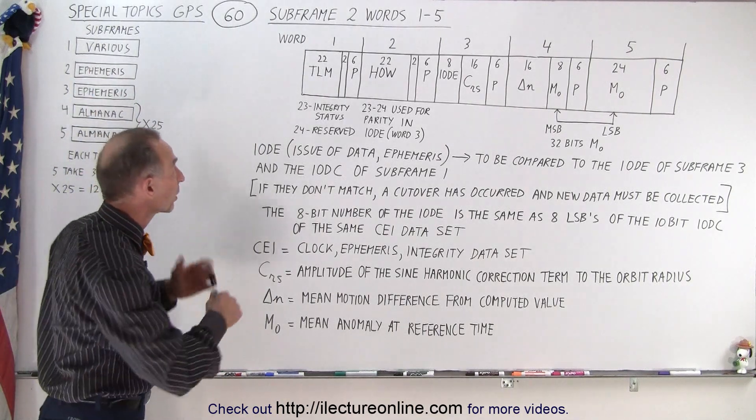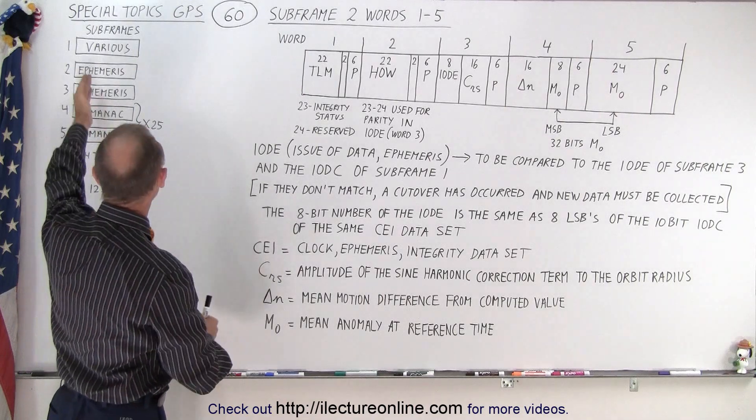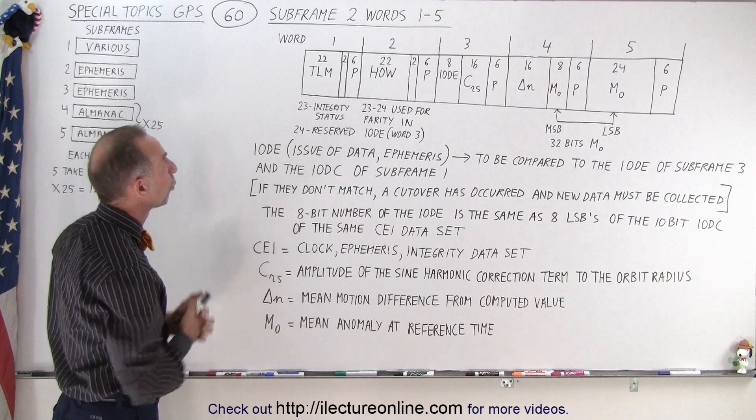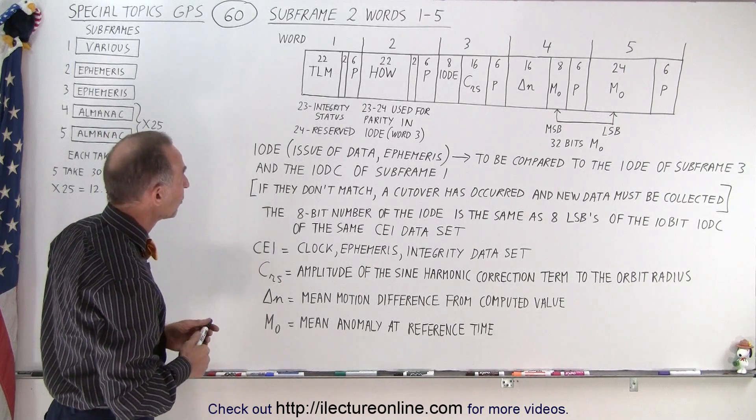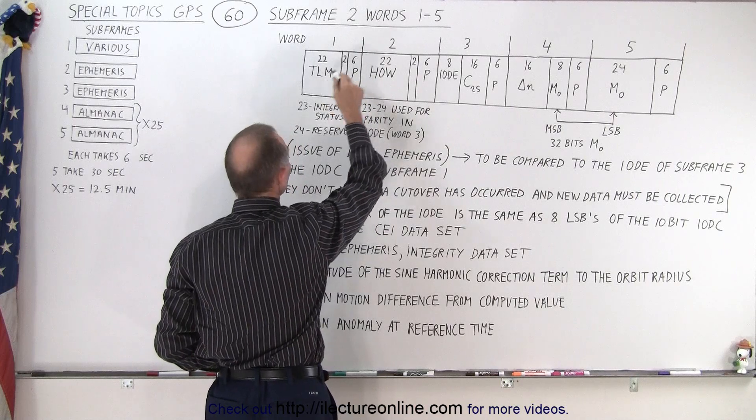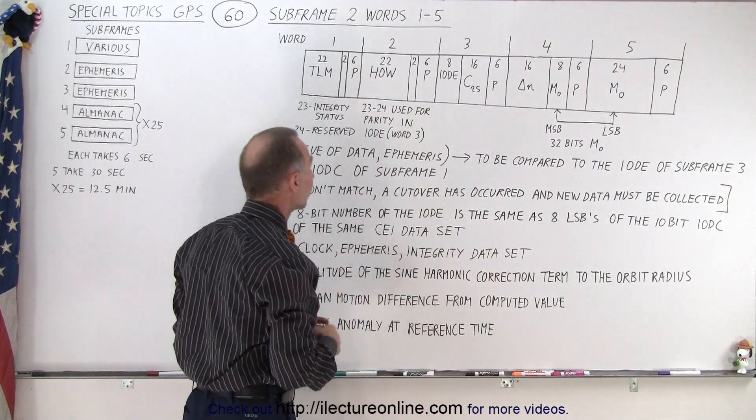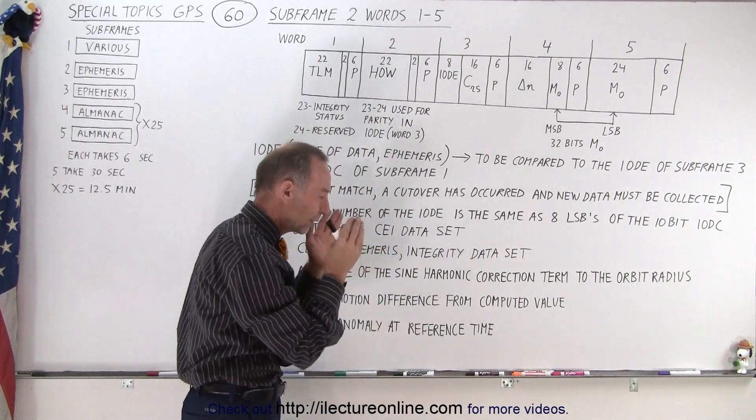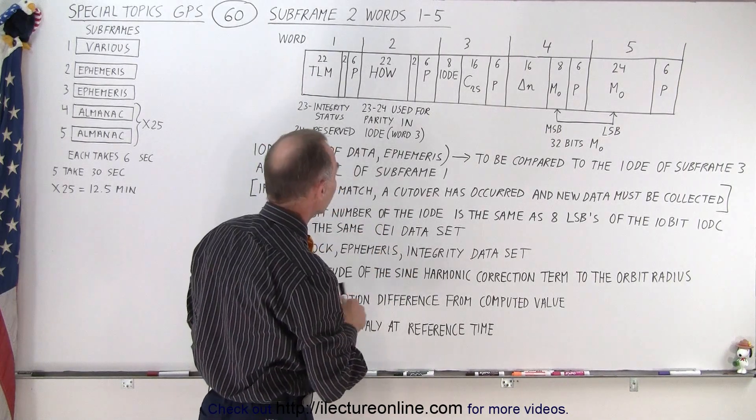So we're now going to look at the contents of subframe 2 which is the first half of this subframe right here. Words 1 through 5. And you can see that the first two words of every subframe always contain the TLM and the HOW, the handover word. So that's always going to be the same for every subframe so that we can lock in to that particular set of data.